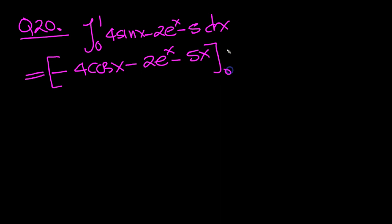We're integrating that between the bounds of 0 to 1. So, top value, put 1 in. Minus 4 cosine 1, minus 2 e to the 1, minus 5 times 1. That's the top value.